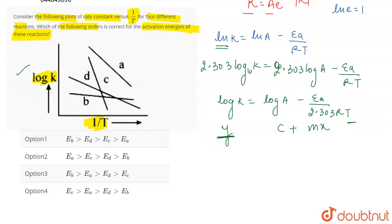So what is the slope? The slope of the curve is going to be minus Ea by 2.303 R. The slope is minus Ea upon 2.303 R.